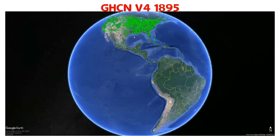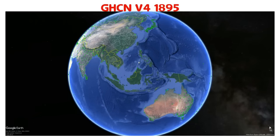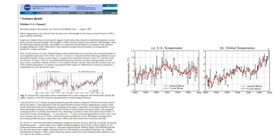This map shows where NASA and NOAA have temperature records from 1895. There's pretty good coverage in the United States and almost no coverage in South America, Africa, the Middle East, and much of Asia. There is not enough data available to calculate historical global temperatures — there's no way to compute a legitimate long-term global temperature graph.